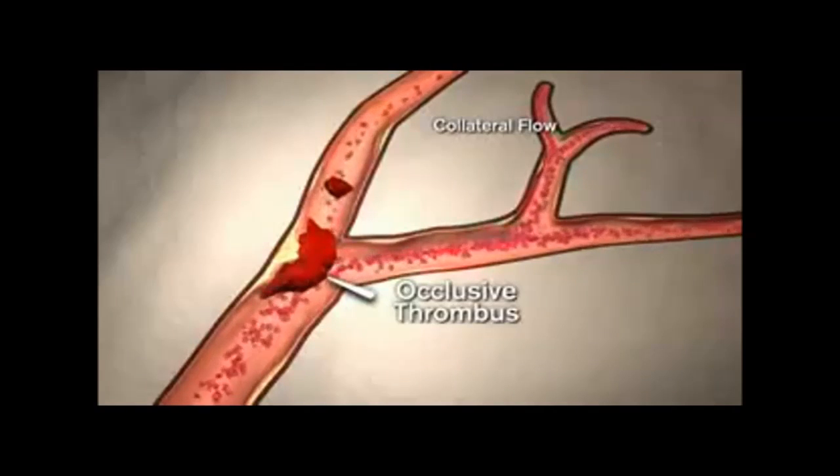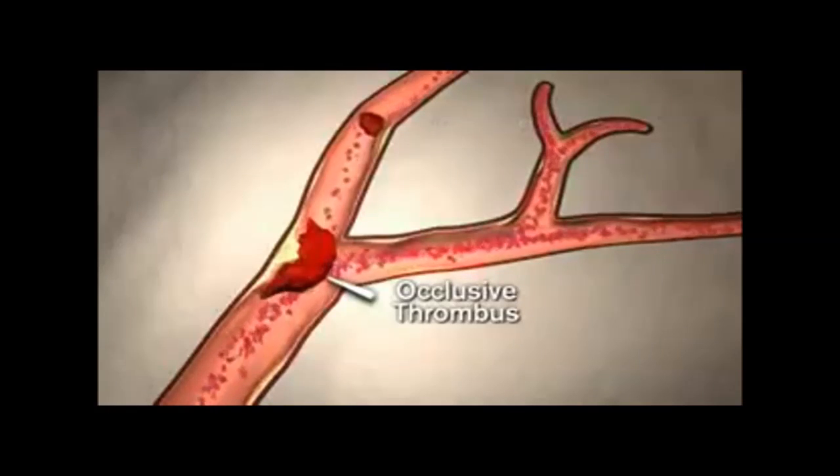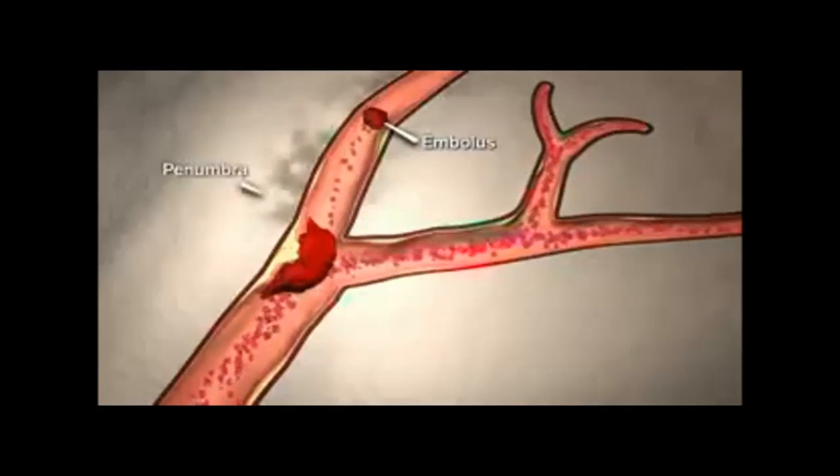When a piece of thrombus breaks off, it's called an embolus as it travels up the artery. During a stroke, ischemia can progress to infarction. Beyond the infarction lies still viable tissue, called the penumbra.